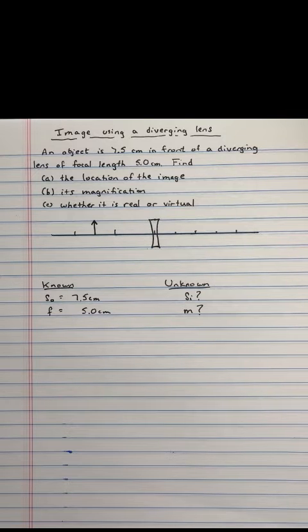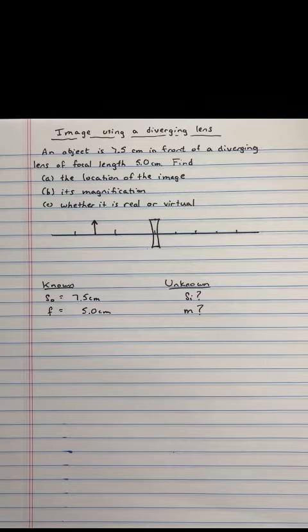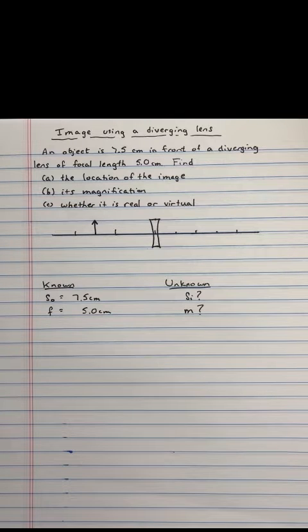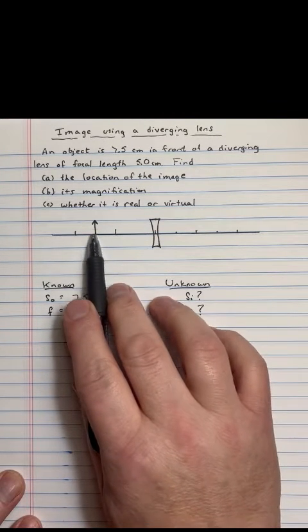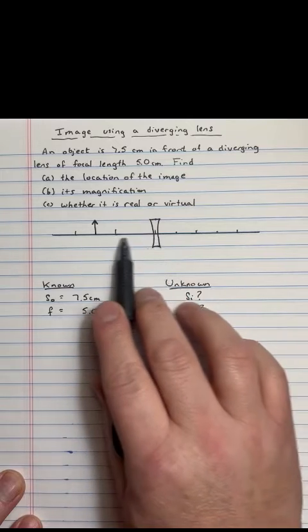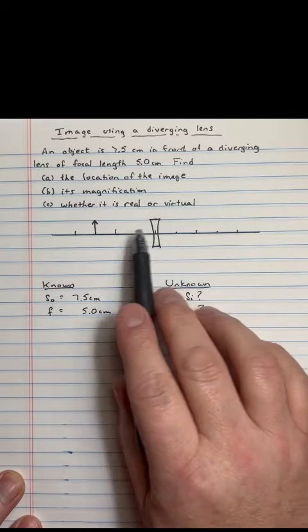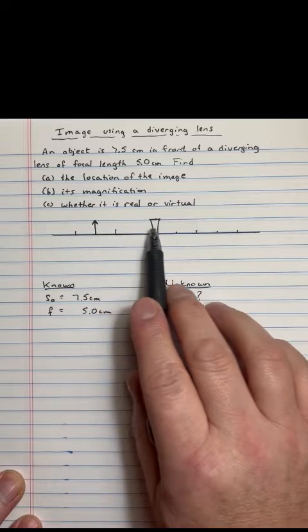So the numbers are almost identical, with one important exception, to the previous example we did. There's a separate video on converging lenses. If you want to see how I derive a particular format I'm going to use, that's the place to go. I'm not going to repeat the derivation here to save some time. Let's imagine we have an object that is seven and a half centimeters from the lens.